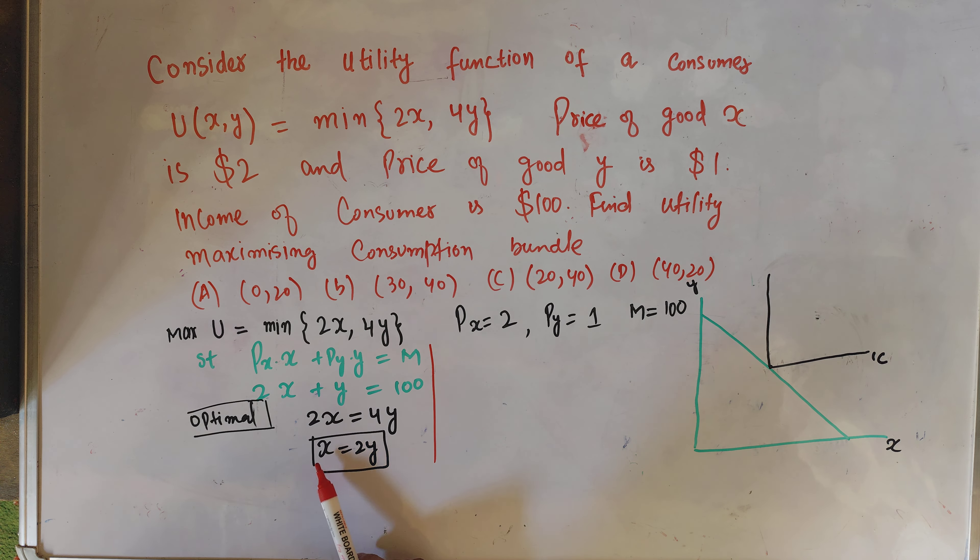Let us find the corresponding utility when we consume 20 units of good y and 40 units of good x. Utility equals minimum of 2x and 4y, which is minimum of (2 × 40) and (4 × 20), so minimum of 80 comma 80, which equals 80. The utility derived when consuming 40 units of good x and 20 units of good y is U = 80.